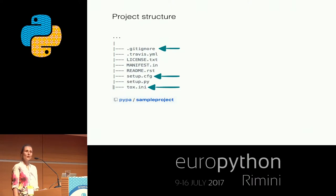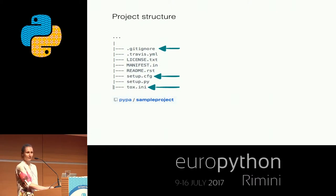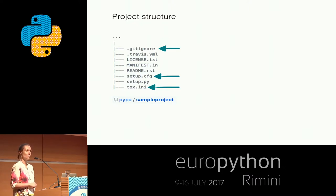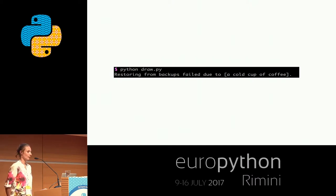In this talk I will concentrate on three files that are already provided by the sample project, and we will add three additional files to this collection along the way. But first, before we jump into the configuration, let's have a look at what Draw DevOps Against Humanity does. Let's draw a sentence. "Restarting from backups fails due to a cold cup of coffee." I imagine it could have happened.